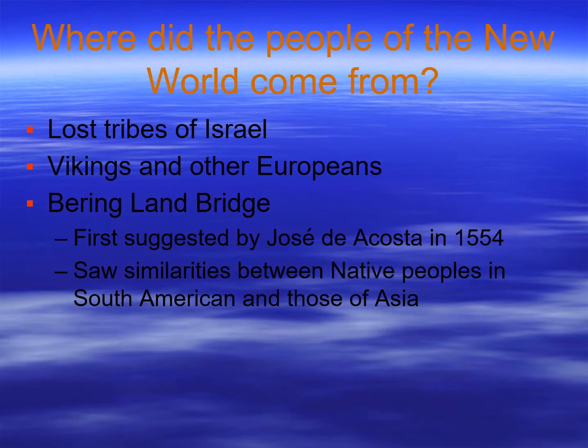One area of speculation was where the people of the New World came from — they weren't accounted for in the Bible. Were they the lost tribes of Israel? Perhaps Vikings or other Europeans? Would they have come across a land bridge? The first to suggest the land bridge was Jose de Acosta in 1554, before the Bering Strait area had been described. He saw similarities between native peoples in South America and those of Asia and speculated they may have come through some kind of land connection.